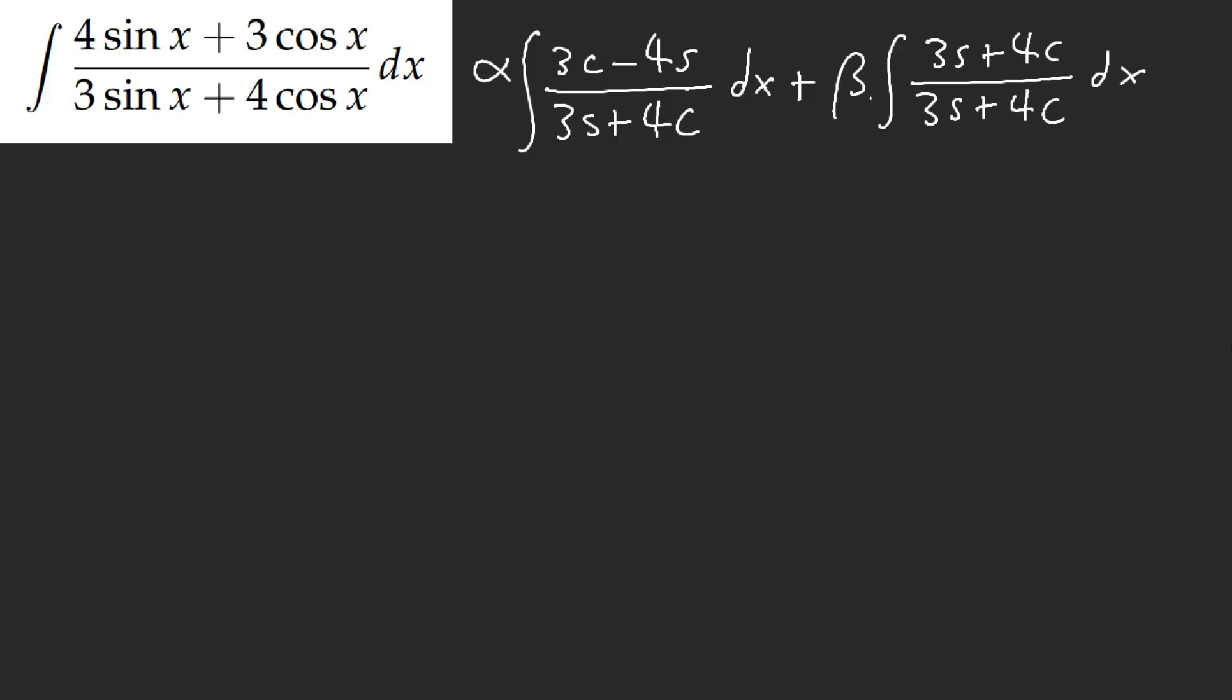Okay, because this is easier to integrate, right? This is just 1, this is just ln of this, whatever this is. But we're given, in our numerator, we are given 4 sine plus 3 cosine. And now we just need to find our coefficients, 3 cosine minus 4 sine, b, 3 sine plus 4 cosine.